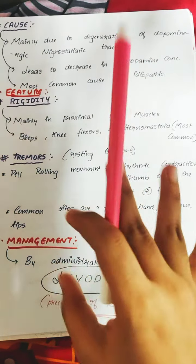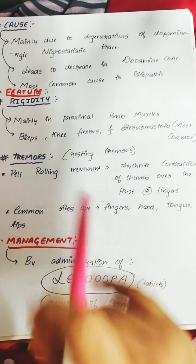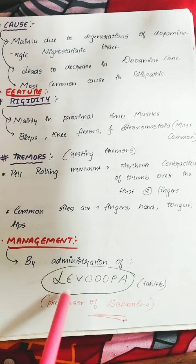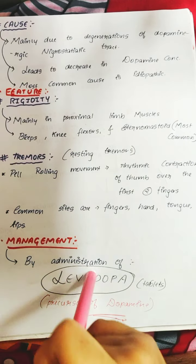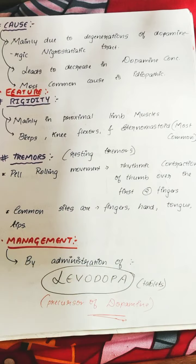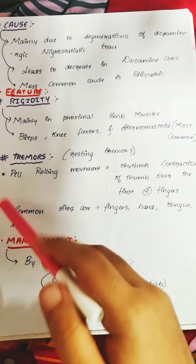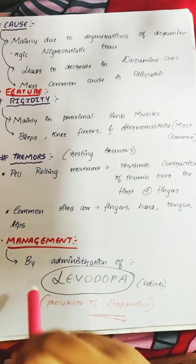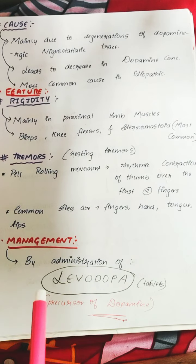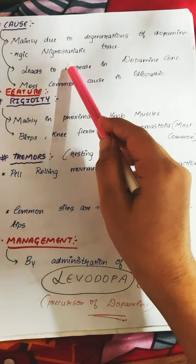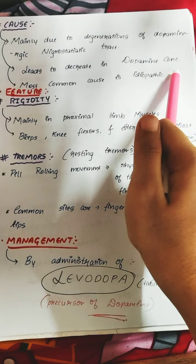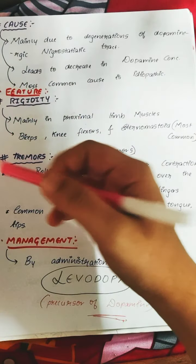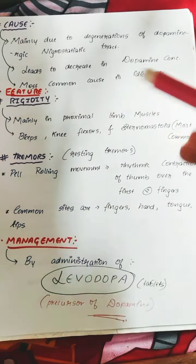Management of Parkinson's disease involves administration of levodopa tablets or injections. Levodopa is a precursor of dopamine; when dopamine concentration is decreased, levodopa helps compensate and bring dopamine levels closer to the normal range. It cannot cure the disease 100% but can reduce symptoms to some level.